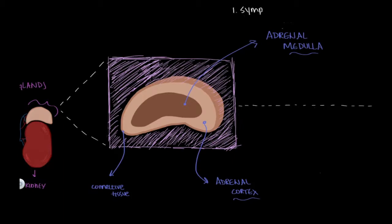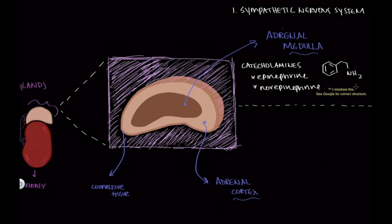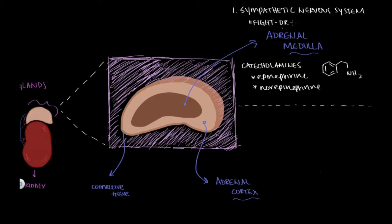The first stage of the stress response is activated by our sympathetic nervous system. The adrenal medulla is interesting because while it's innervated by the sympathetic nervous system, it actually releases the catecholamine hormones epinephrine and norepinephrine into our bloodstream. These two hormones are responsible for the very intense, immediate fight-or-flight response that is key for survival. But it's important to note that this is not what we're talking about when we're discussing the HPA axis.